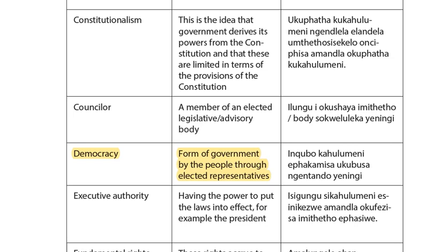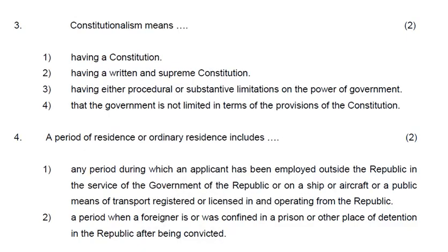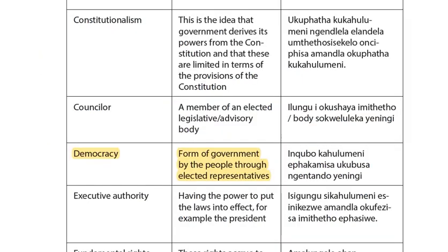The third question: 'Constitutionalism means...' — the answer is three, which is having either procedural or substantive limitations on the power of government. Let us go to page 48 of our study guide. This is the idea that government derives its powers from the constitution and that these are limited in terms of the provisions of the constitution.